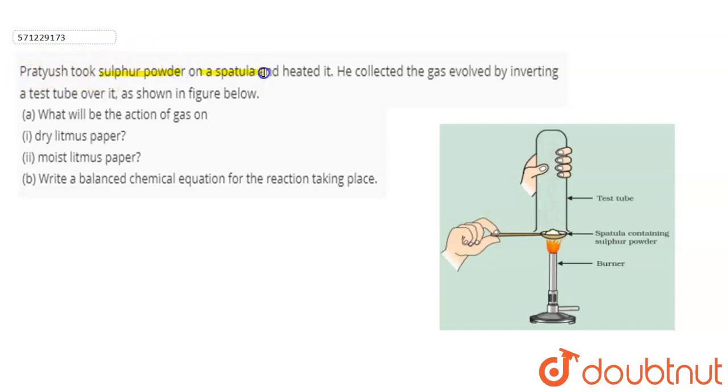He collects the gas evolved by inverting a test tube over it as shown in figure below. So basically Pratyush took sulfur powder on a spatula like this and heated it.